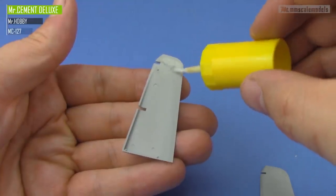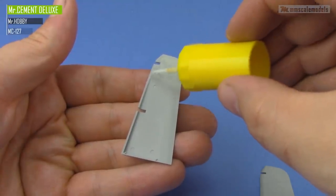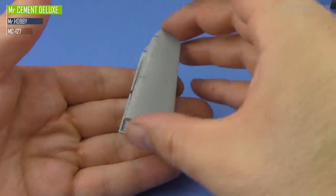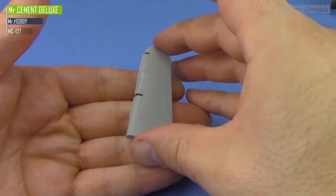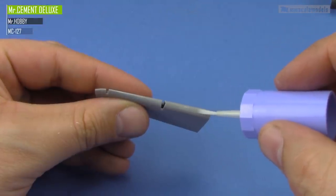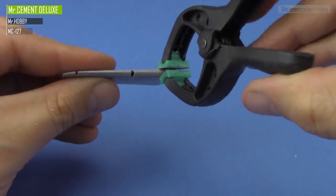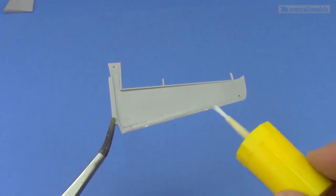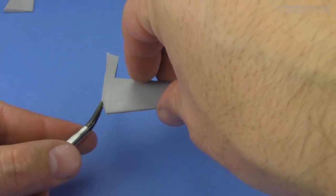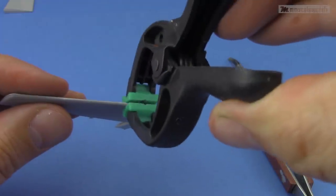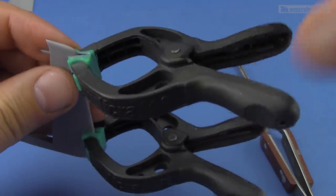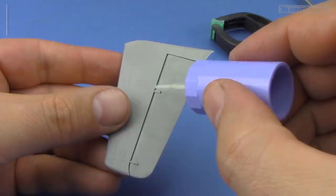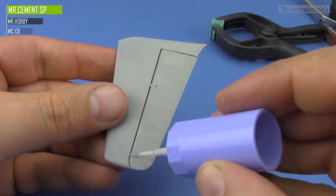The rudder is split in half as well, so with the help of some Mr. Cement Deluxe they get easily glued together. The horizontal stabilizers come in two pieces for the main fixed plane and a third piece for the actual control surface. After gluing the fixed plane together, we can slide the elevators over the attachment points. This needs to be done firmly but gently because the attachment studs are a bit delicate.